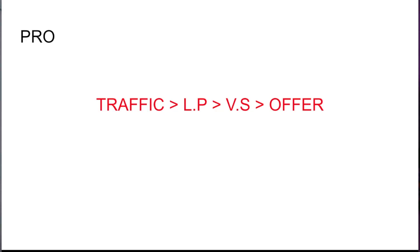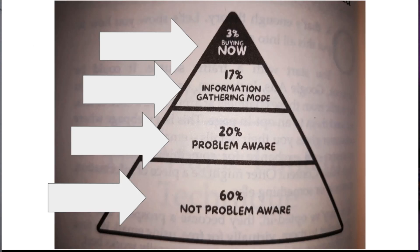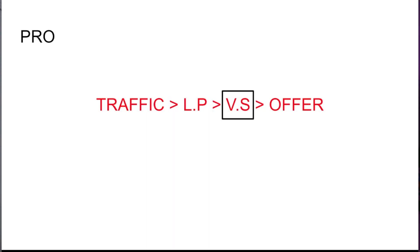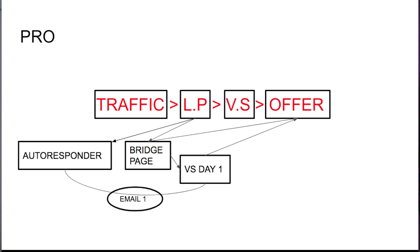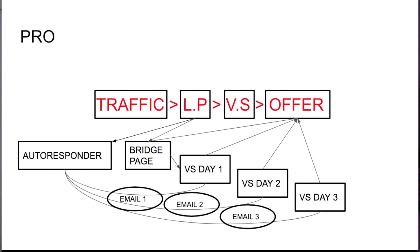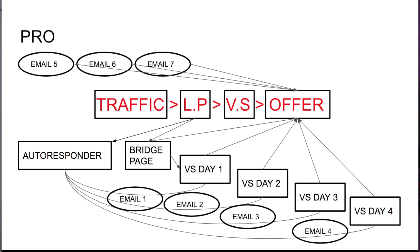They try different offers, different methods, different angles, different approaches to find winners — they have spying software to see what's working and what's not. If you want to do it with a free traffic method, I recommend the pro method: you send traffic to a landing page, capture the email, then send to a value series where you build trust with them — the conversion rate is much much higher. Then you send them to an offer, and you're talking to all of the people: buying mode, information-gathering mode, and problem-aware. Sending traffic to a landing page to an autoresponder, it lands on the bridge page, then day one training, day two, day three, day four, and then we send them emails with the offer and ongoing value.